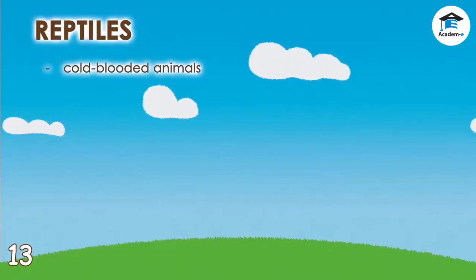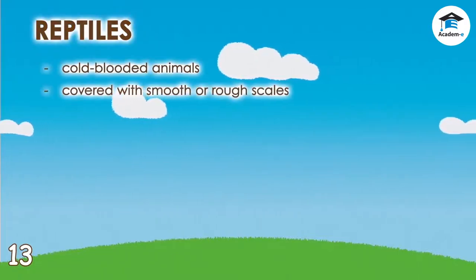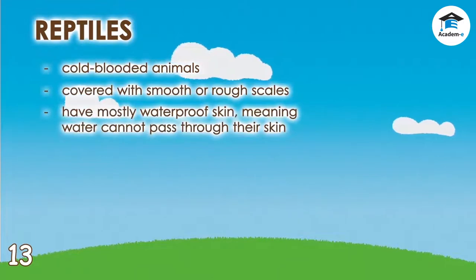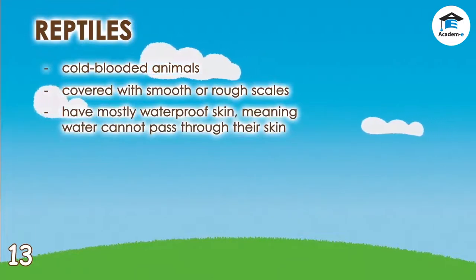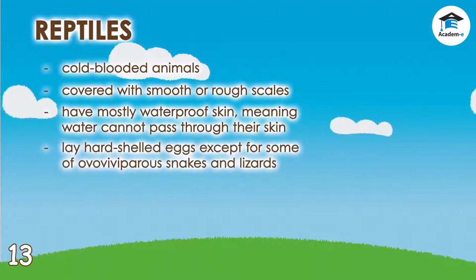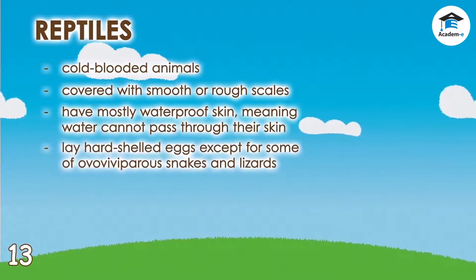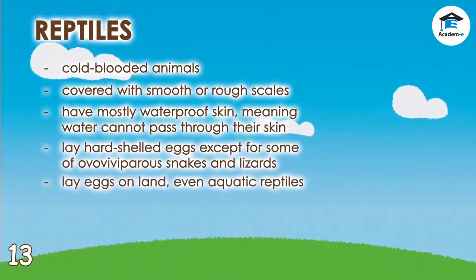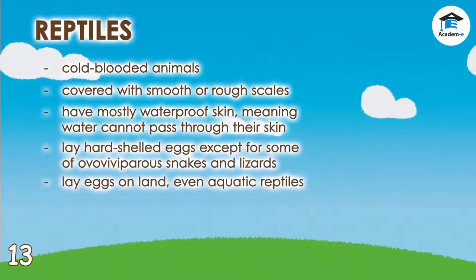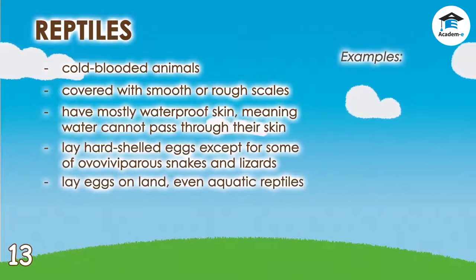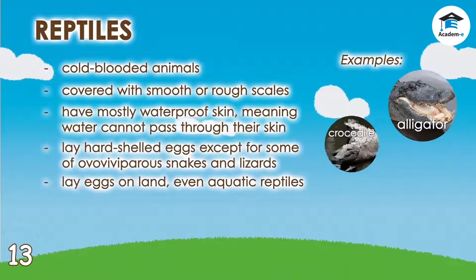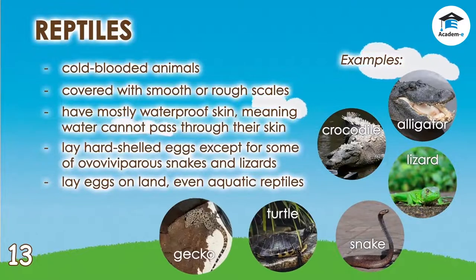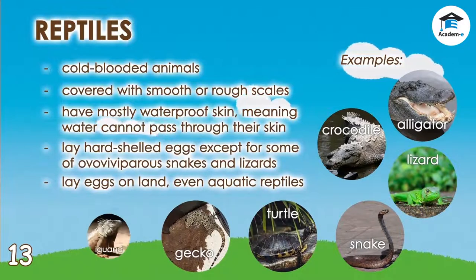Reptiles are cold-blooded animals covered with smooth or rough scales. Their skin is mostly waterproof, meaning water cannot pass through their skin. Most reptiles lay hard-shelled eggs, except for some ovoviviparous snakes and lizards. They lay eggs on land, even aquatic reptiles. Reptiles include alligators, crocodiles, lizards, snakes, turtles, geckos, and iguanas.